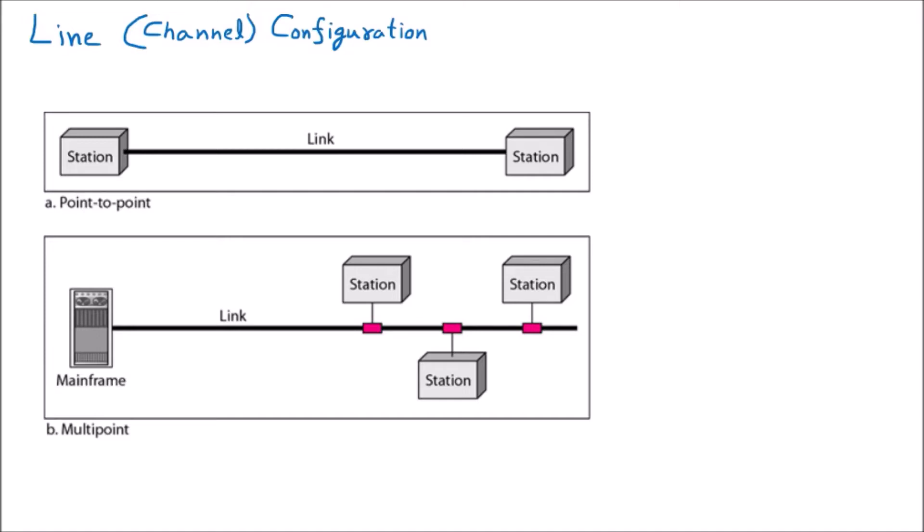Today we are starting the topic of line configuration, or channel configuration. A line is the channel — meaning whatever communication medium we are using is called the channel or line. How we configure that is the topic. There are two types of line configuration: point-to-point and multi-point.